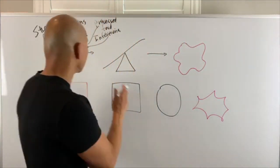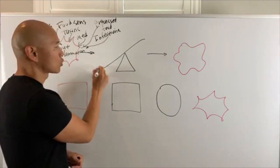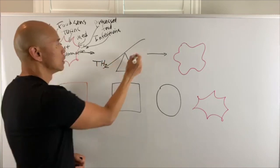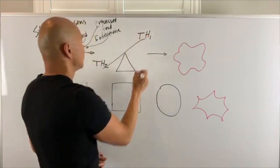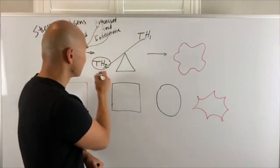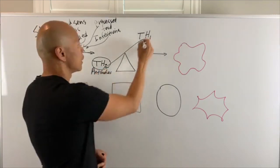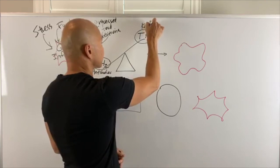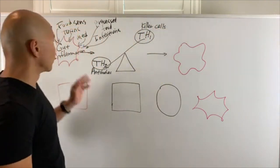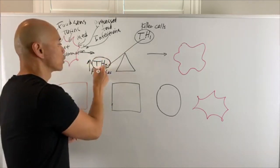Now, once you have gut inflammation, what happens is this inflammatory response will actually start to shift your immune system. So here you have a T helper 2, and here you have a T helper 1. So the T helper 2 cells are the cells in your immune system that make antibodies.